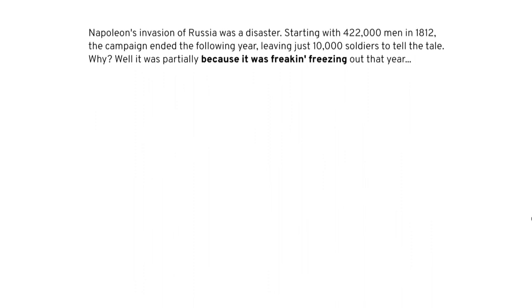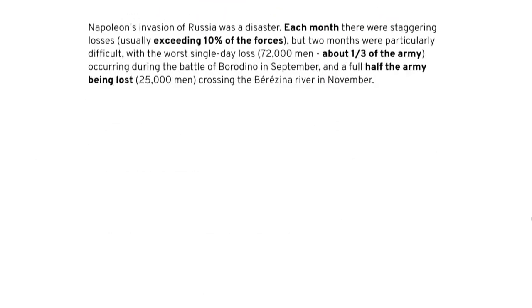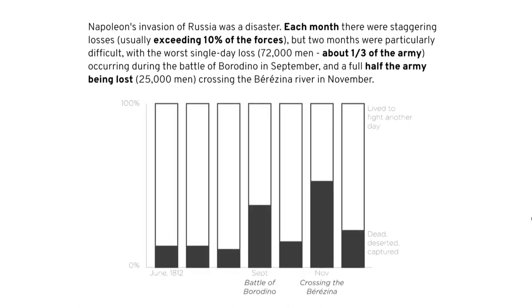What if this was my story: it was a disaster — 422,000 men to start, 10,000 men at the end — and it was freaking freezing out. I'm not talking about when the temperature changed, not about the Battle of Borodino or crossing the Berezina River. I'm just saying it was freaking cold. I could do a waffle plot to show the data and an infographic-style depiction — just a picture and temperature, maybe a number. That tells that story. Or what if I said: each month, staggering losses — 10% every month at least, with two months that were particularly bad. That's a percentage display, snapshots in time. We'd all go with a 100% stacked bar chart — those are the words I used, and those words drove me to the visual.